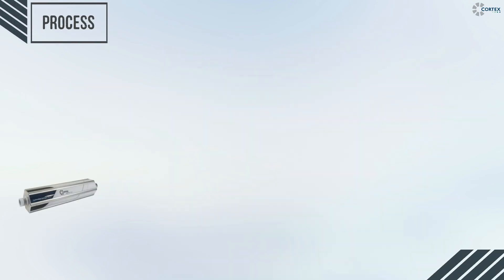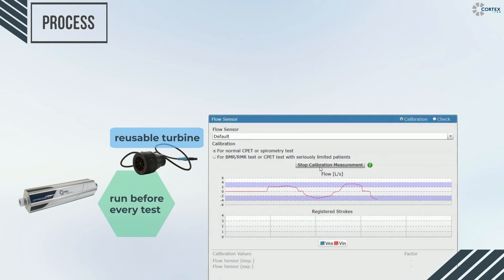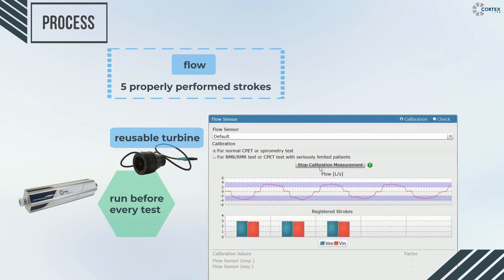Moreover, the calibration of the reusable turbine is mandatory to ensure accurate flow volume data. It is performed before every test and with the help of a three-liter calibration pump, five successful strokes need to be completed.